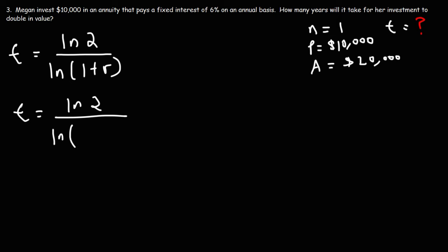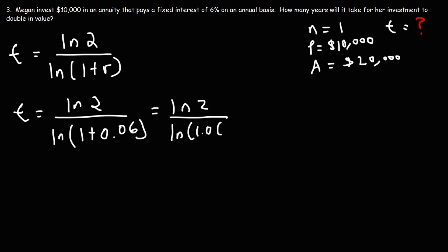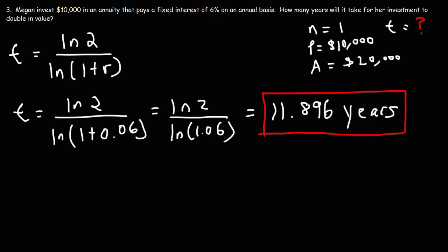Now let's plug in R. R is 6%, so 0.06 as a decimal. This gives us the natural log of 2 divided by the natural log of 1.06. You can use log or natural log — both give the same answer. Typing LN(2) divided by LN(1.06), the answer is 11.896 years. That's how long it will take for Megan's investment to double in value.